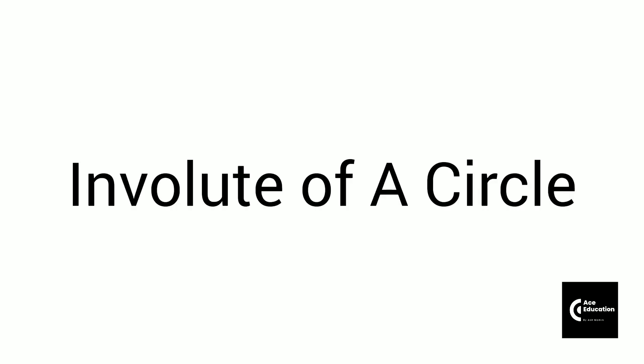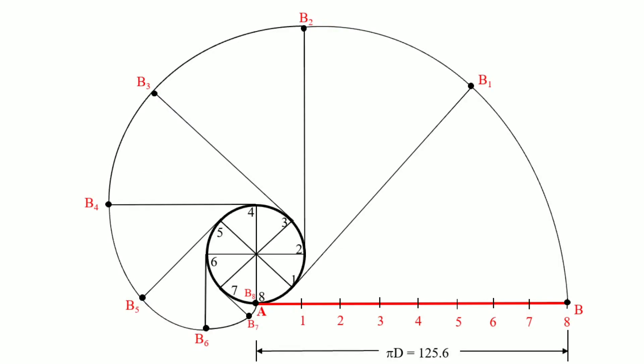Hello and welcome friends. We are going to see the envelope of a circle. Basically, an envelope is a type of curve formed when we wind a thread or string tightly on the circumference of a circle, or the perimeter of any polygon. The curve traced out by any point on the string is called the envelope.